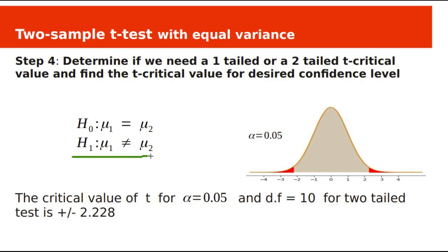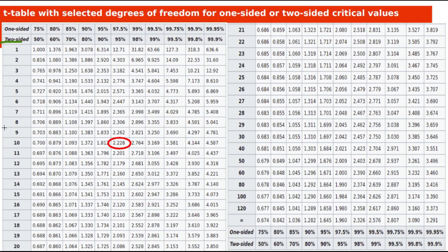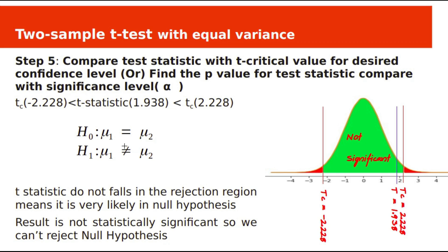This is a two-tail test. The t-critical value for a two-tail test with 10 degrees of freedom at alpha 0.05 is 2.228. The t-critical values are minus 2.228 and plus 2.228. The t-statistic of 1.938 falls within the 95% confidence interval and is not in the rejection region. The result is not significant, so we cannot reject the null hypothesis.